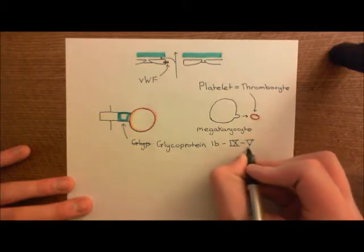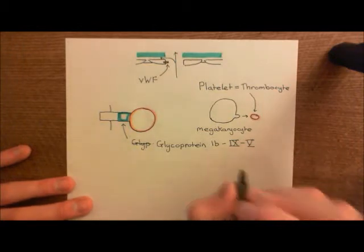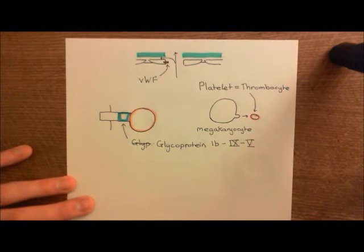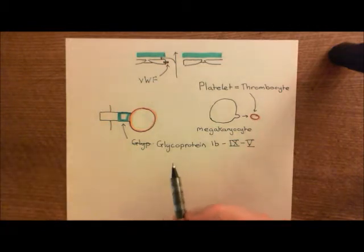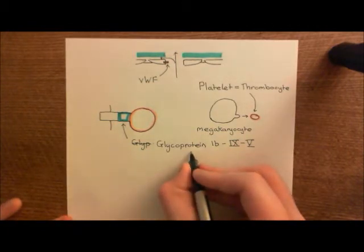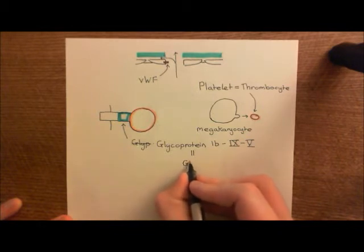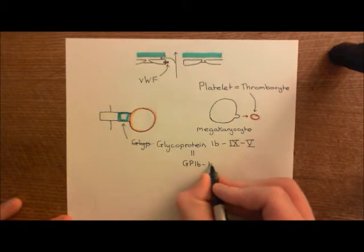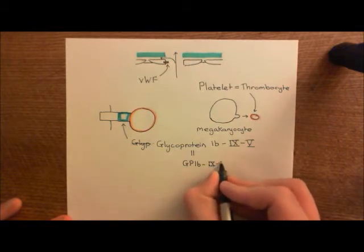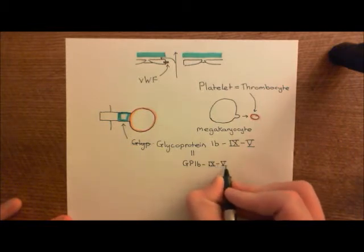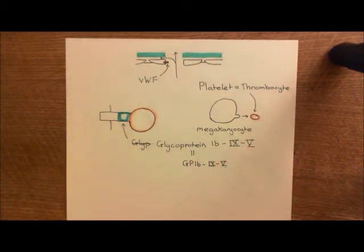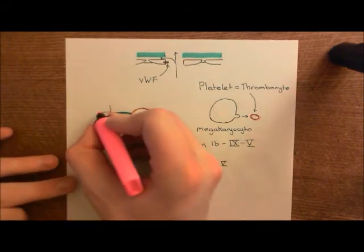So this is glycoprotein 1B-IX-V. Vascular physiologists absolutely love Roman numerals, so we'll see a lot of Roman numerals later on as well in the coagulation cascade. This is glycoprotein 1B-IX-V, which is often abbreviated to GP for glycoprotein, then you just have 1B, and then you have to put the Roman numerals in, IX-V.